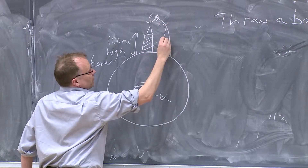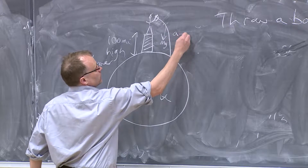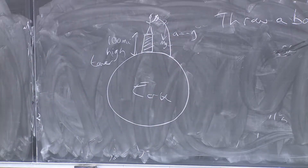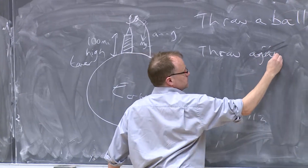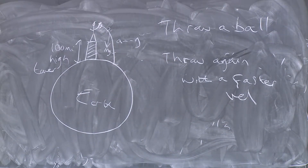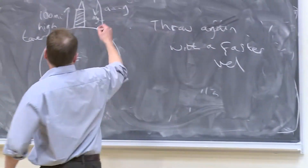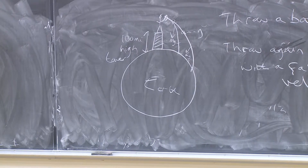The vertical component of the acceleration of the ball is mg, so it accelerates to the ground with an acceleration of g. So you throw the ball and it hits the ground. Now let's throw it again with a faster velocity. If you throw it with a faster velocity, it'll go further and land somewhere else on the Earth.